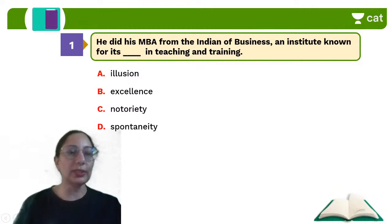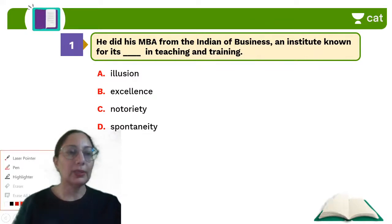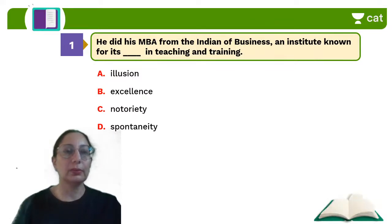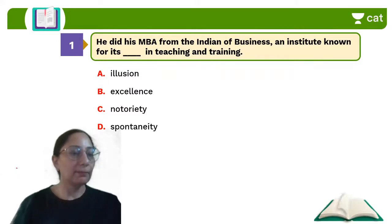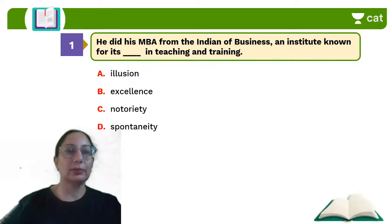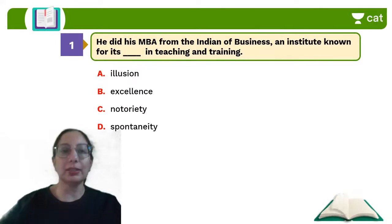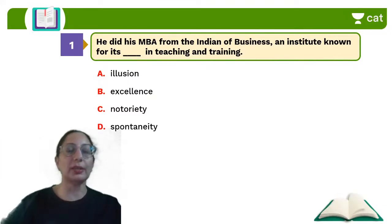First question: He did his MBA from the Indian School of Business, an institute known for its DASH in teaching and training. The answer is B — excellence. Excellence is the correct answer.